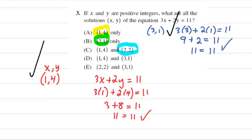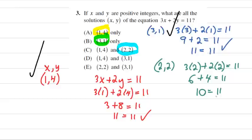Last but not least, we're going to try 2 comma 2. That's 3 times 2 plus 2 times 2 should equal 11. 3 times 2 is 6. 2 times 2 is 4. So we have 10 on the left and 11 on the right, and they do not match up. So we've got 3 comma 1 and 1 comma 4 working out, but 2 comma 2 not working out. That means that the correct answer would be choice D.